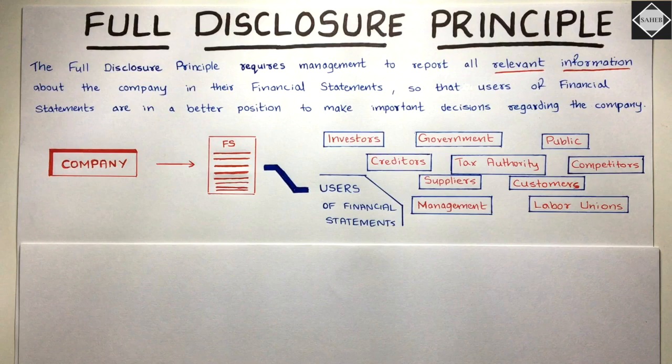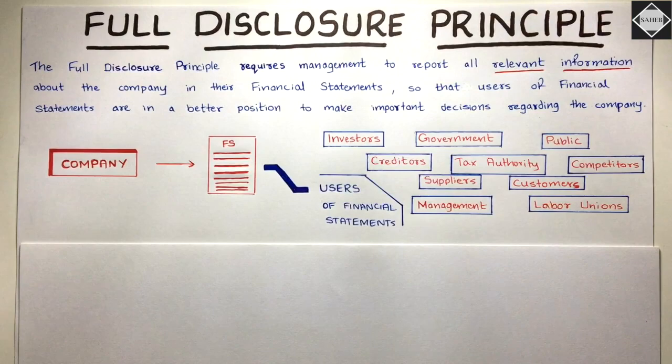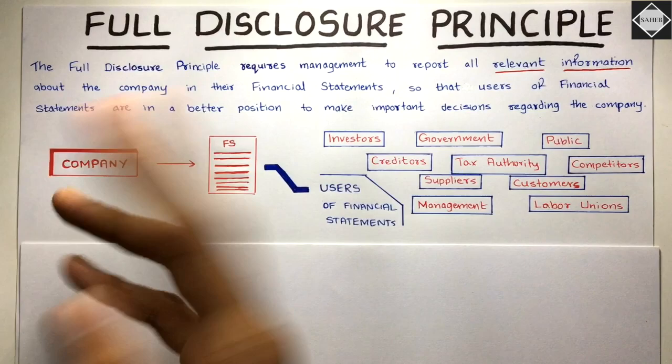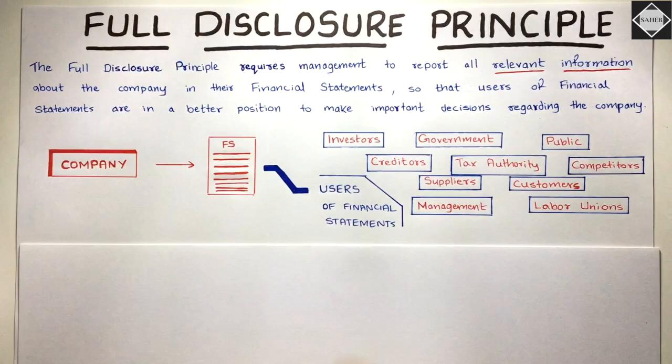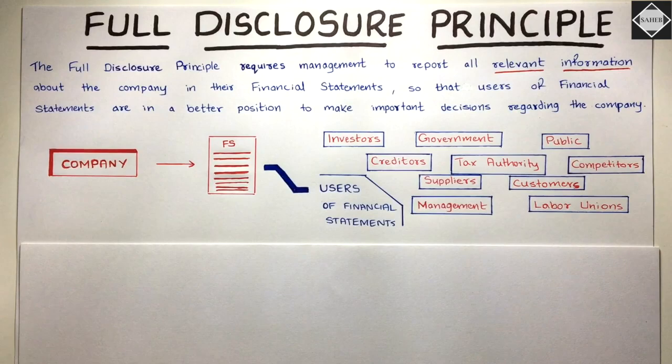Whatever is happening in those companies, external parties are not completely aware of that directly. They get information about the company from the news and from the financial statements. Through financial statements, these parties understand the financial performance — profit or loss — the financial position, how much assets and liabilities the company has, and liquidity — how much cash they have.